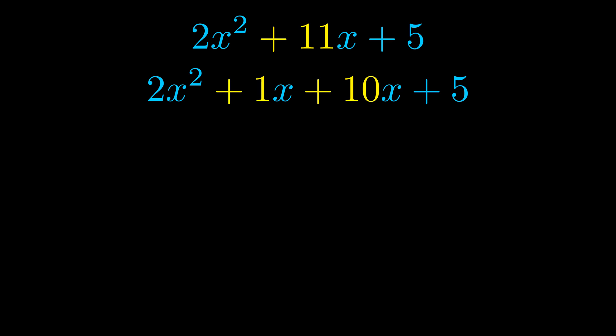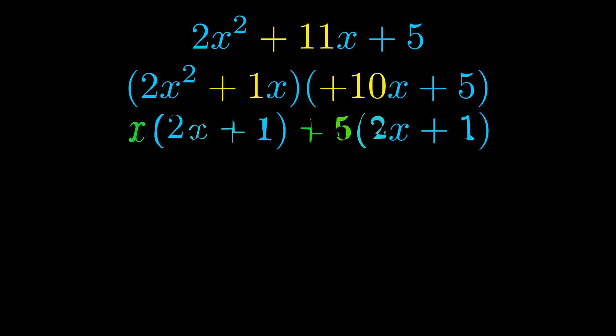Once we've done this we go ahead and we put parentheses around the first term and the last term. And we do that so that we can take the greatest common factor out of both terms. We can see the greatest common factor is now outside in green.